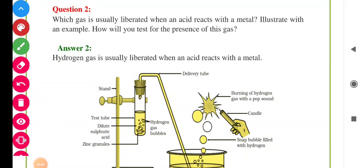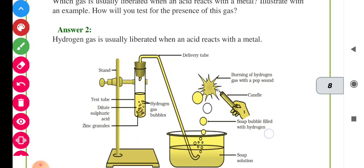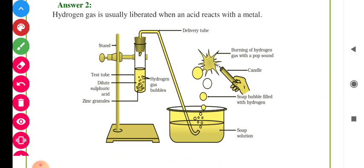Question number 2: Which gas is usually liberated when an acid reacts with a metal? Illustrate with an example. How will you test for the presence of this gas? Hydrogen gas is usually liberated when an acid reacts with a metal. We can find the presence of gas with the help of a burning candle. We need to keep a burning candle near the hydrogen bubbles, and the hydrogen bubbles will blast with a popping sound. In this way we can find the presence of hydrogen gas.